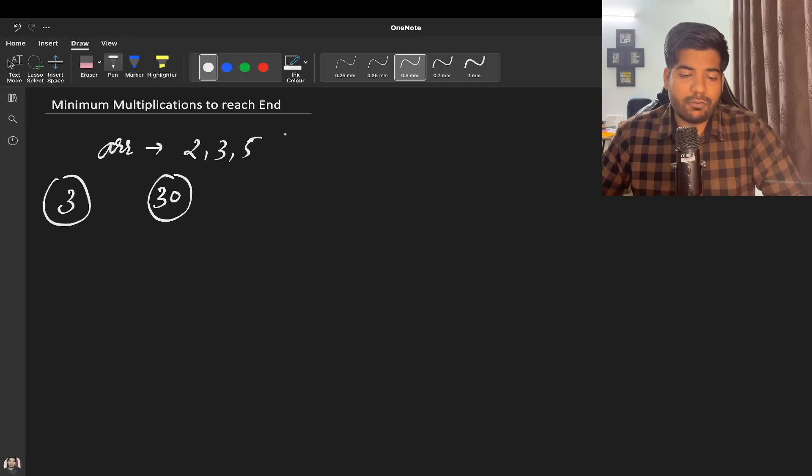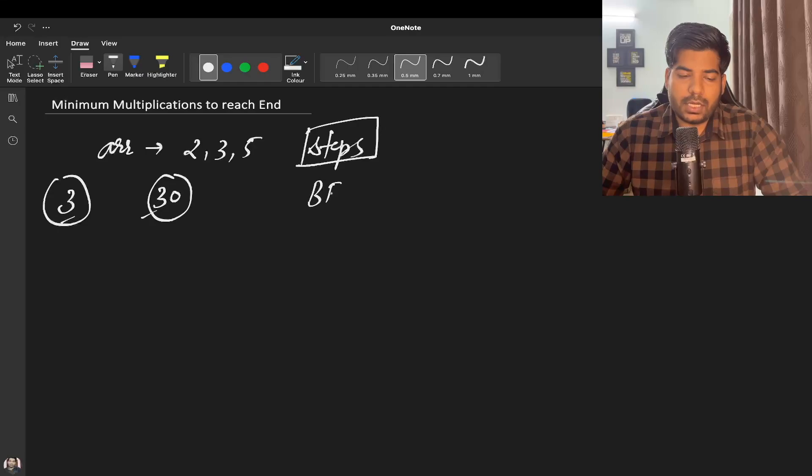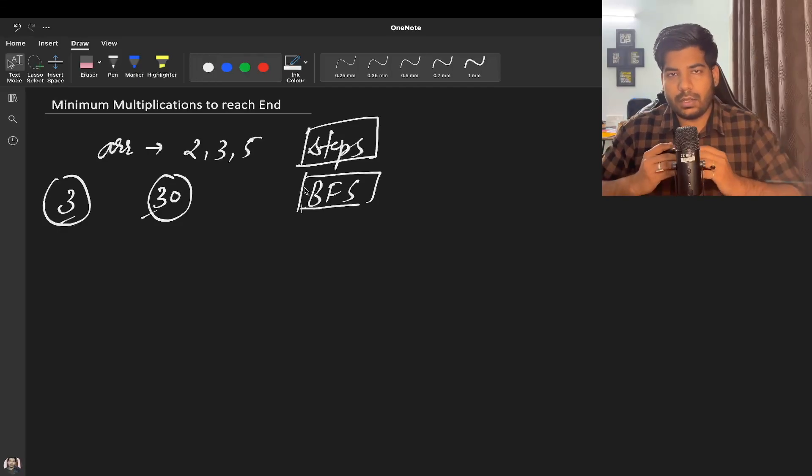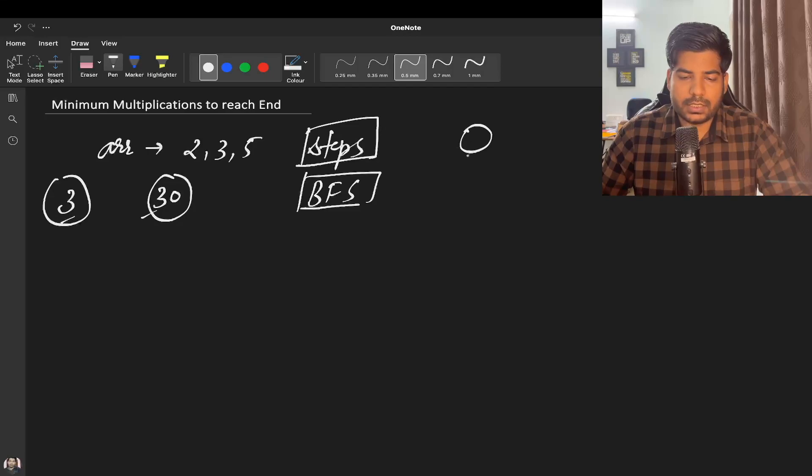We have to give the minimum number of steps. Whenever you are asked this type of question about minimum number of steps, with a start and an end, then think that BFS will be used. Because we know breadth-first traversal travels in a breadth-wise manner. For example, let's say this is the starting point.